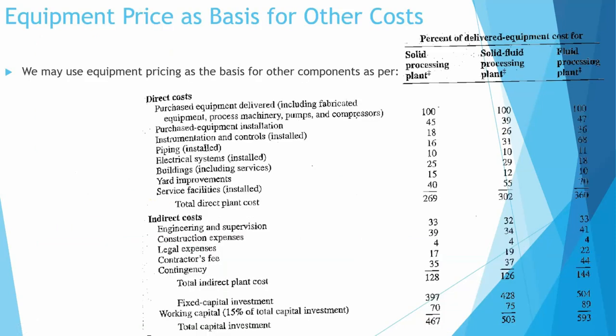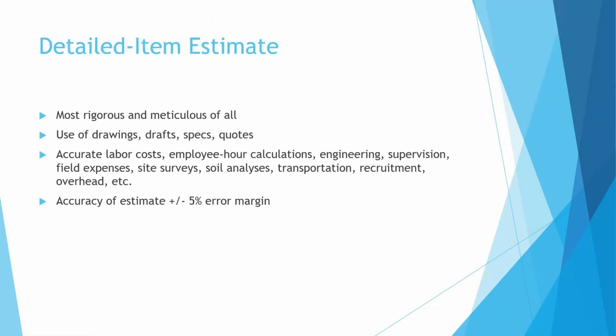You can also get pieces of equipment based on other costs. I invite you to look into this if you're interested, based on an approximated amount, but I will not use this specifically. The most rigorous and meticulous way of doing this is to do detailed estimation. The accuracy is going to be pretty high, but it's going to take you a long time to get a detailed item estimation.